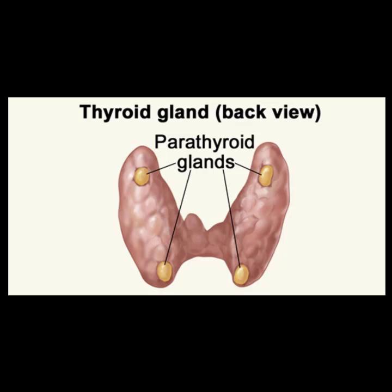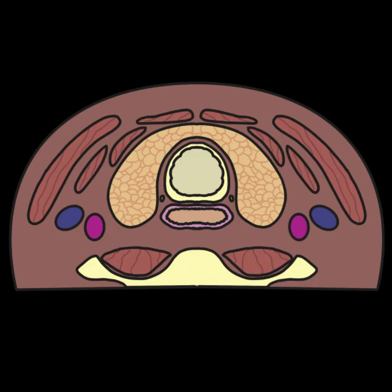Next to the thyroid at each pole are the parathyroids. The parathyroids secrete parathyroid hormone, which helps to control calcium and phosphorus blood levels. The parathyroid glands are not typically appreciated by ultrasound when they are of normal size, which is about 3 millimeters. Adenomas in the parathyroids can cause them to enlarge and appear as exophytic masses to the thyroid.